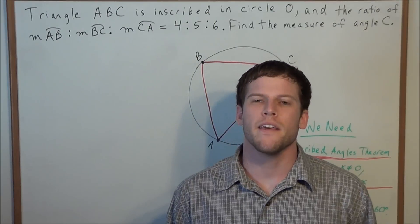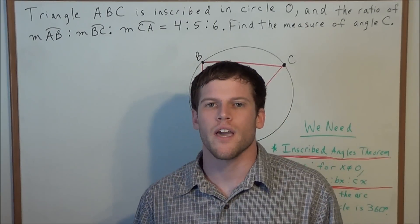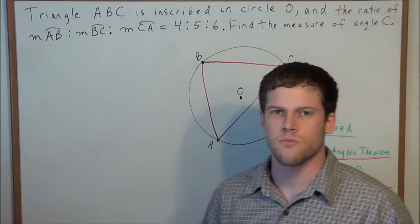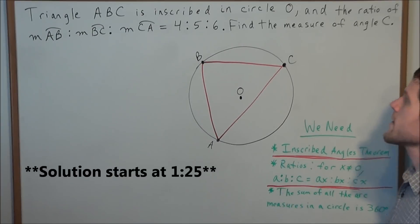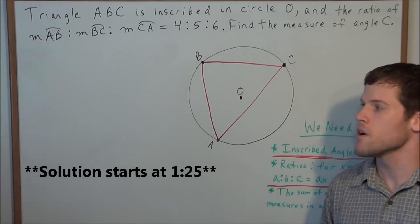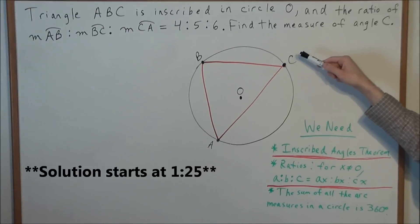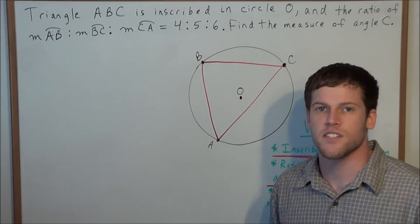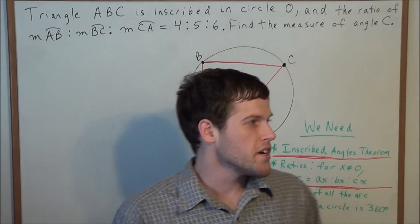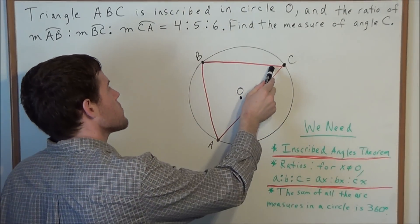Hello YouTube students, my name is Vincent and today I want to take a look at an inscribed angles problem. We have triangle ABC inscribed in circle O, and the ratio of the measure of arc AB to the measure of arc BC to the measure of arc CA equals 4 to 5 to 6. We need to find the measure of angle C.